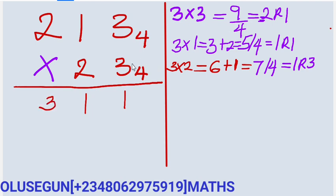Since you are no longer multiplying 3 with any number, you are going to write the 1 — the quotient — here.